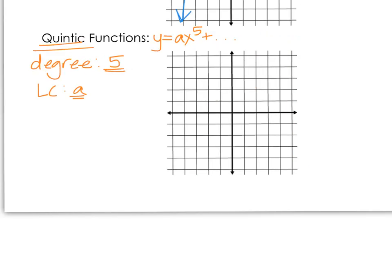Our last named polynomial function is a quintic function, with a degree of 5. Like linear and cubic functions, quintic functions have arrows pointing in opposite directions. But with a degree bigger than 3, you'll have more than one curve in the shape — if a is negative it decreases left to right but may go down, up, down, and up again before ending. That's a lot of content for the first part of 5.2.